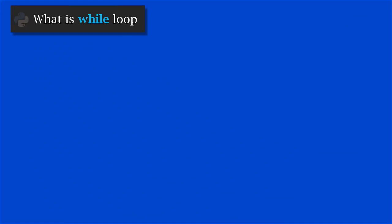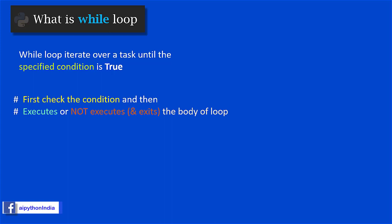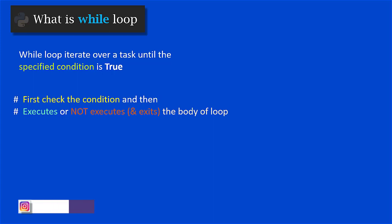Let's understand what is while loop. While loop iterates over a task until the specified condition is true. It first checks the condition and then executes or does not execute depending on the condition. If the condition is true, it keeps executing. At any point if the condition becomes false, it will exit the loop.